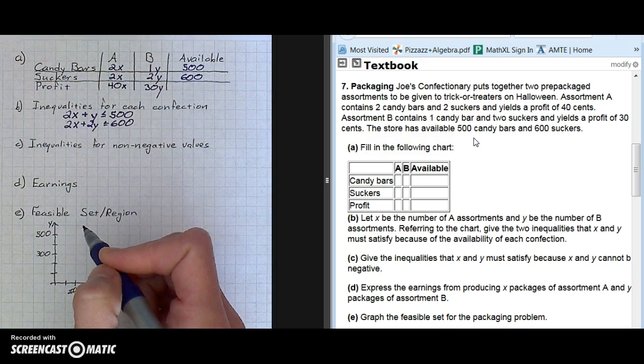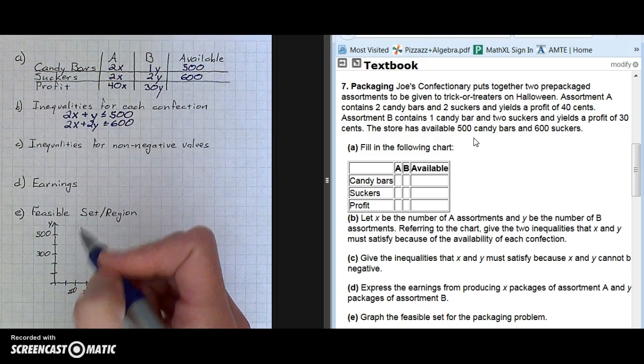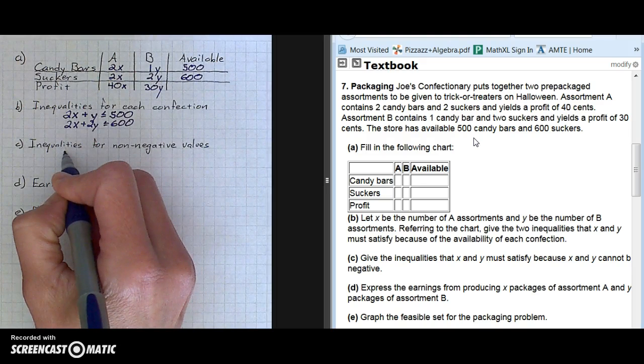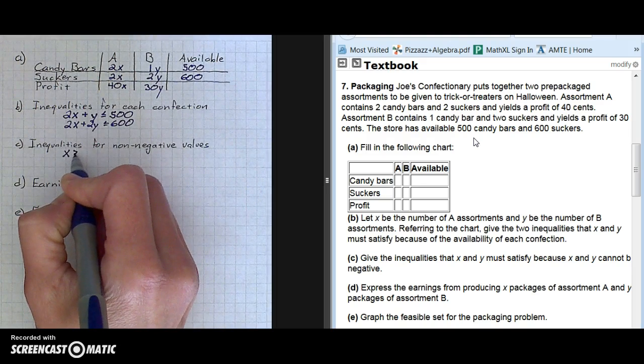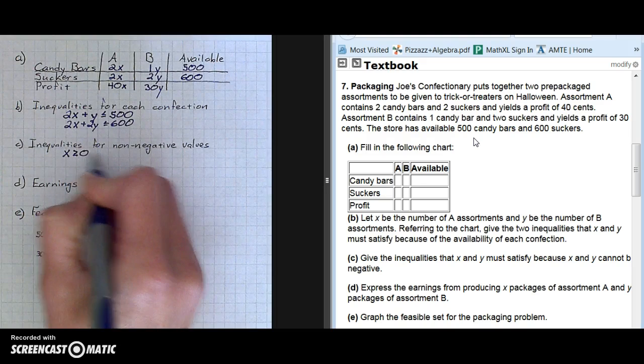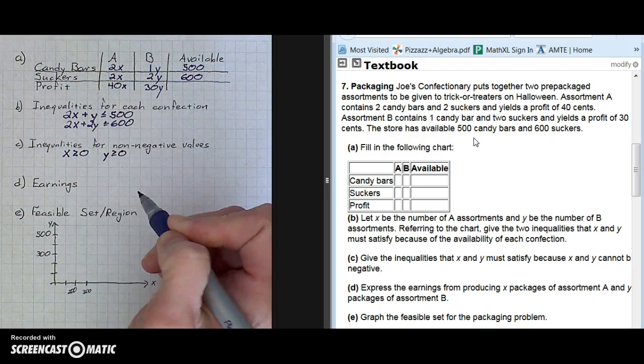Part C, give the inequalities that X and Y must satisfy because X and Y cannot be negative. We can't have negative suckers, so we want to make sure that our X values and our Y values for candy bars and suckers are both positive.